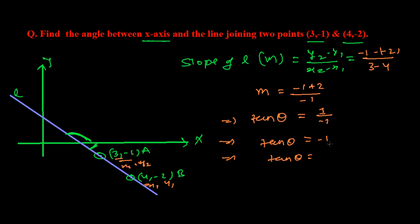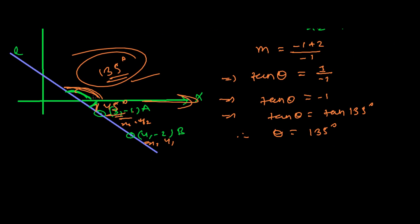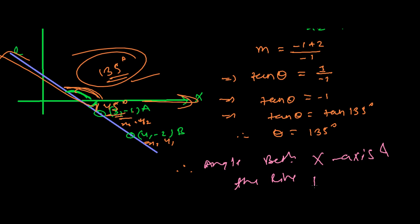Since tan(theta) equals minus one, that corresponds to 135 degrees. Therefore, theta equals 135 degrees. So the angle between the x-axis and the line joining the given two points is 135 degrees. If one angle is 135 degrees, then the supplementary angle is 45 degrees.